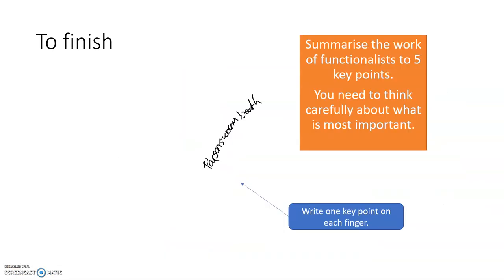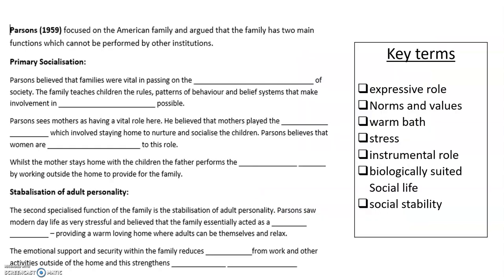What I'd like you to do is summarise the functionalist ideas in five key points. You could draw around your hand and write one point per finger. To test your knowledge, key words are listed on the side. For instance: 'Parsons believed that families were vital in passing on the blank of society' - hopefully you'd look at the key terms and go, oh yeah, it's norms and values. Feel free to pause and have a go at that activity.